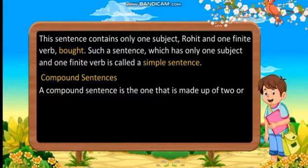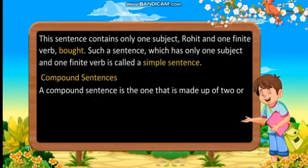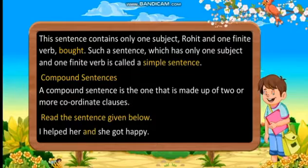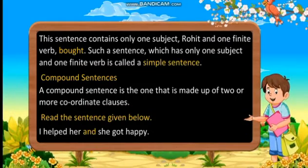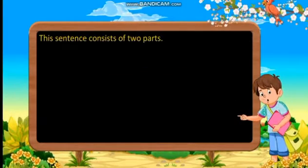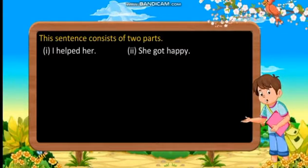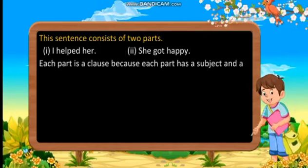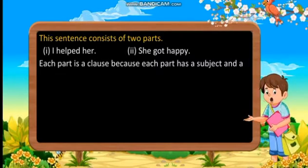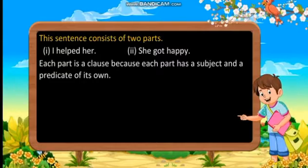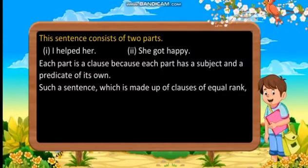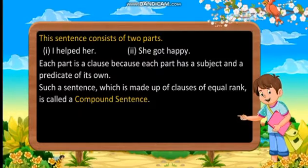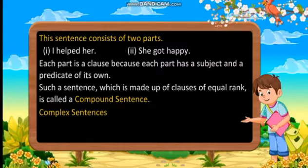Compound sentences. A compound sentence is the one that is made up of two or more coordinate clauses. Read the sentence: 'I helped her and she got happy.' This sentence consists of two parts: 'I helped her' and 'she got happy.' Each part is a clause because each part has a subject and a predicate of its own. Such a sentence which is made up of clauses of equal rank is called a compound sentence.